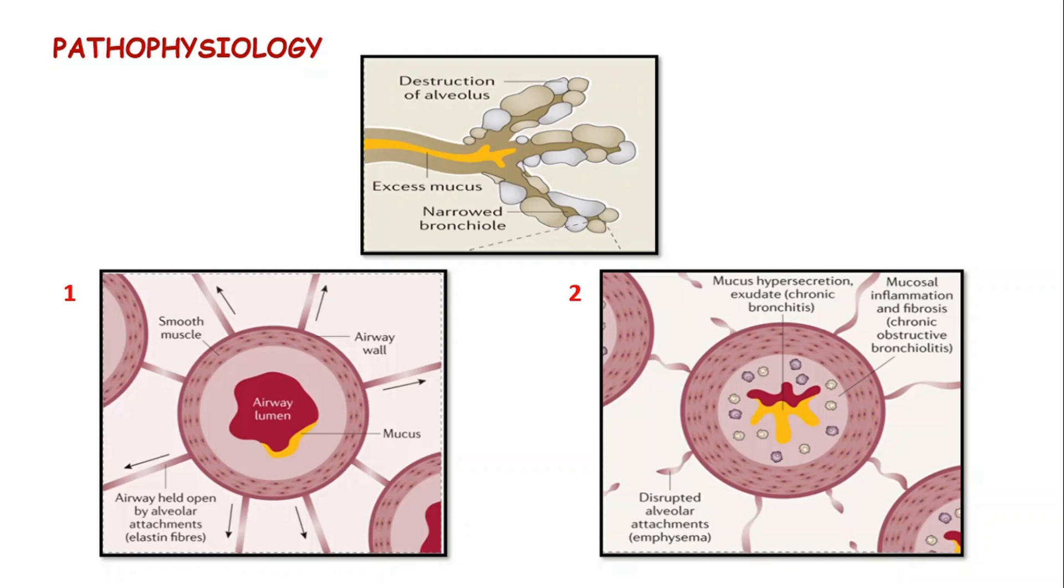In picture number one, we see a normal airway lumen and the elastin fibers which hold the alveolus open. In picture number two, there is excess mucus secreted into the airways as seen in chronic bronchitis patients.